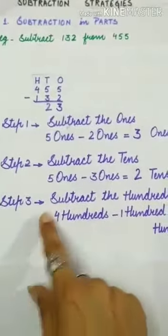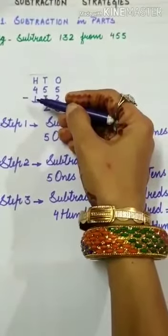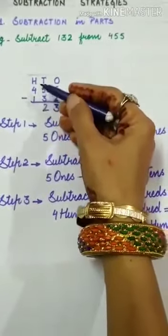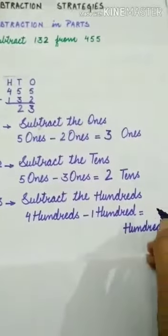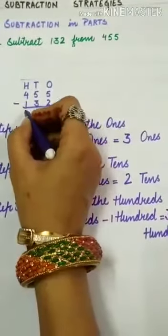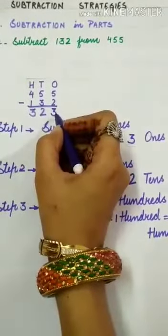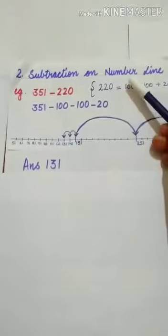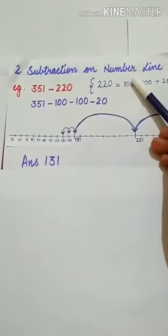Now step 3 is subtract the hundreds. At the hundreds place the digits are 4 and 1. If we subtract 1 from any number we get the predecessor of the number. What is the predecessor of 4? It is 3. So write down 3 under the hundreds column. Our answer is 323.